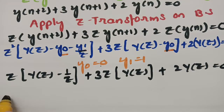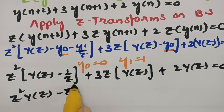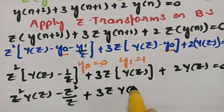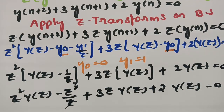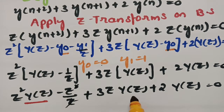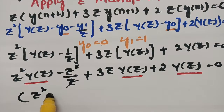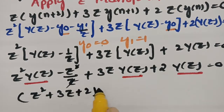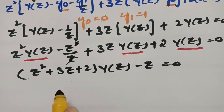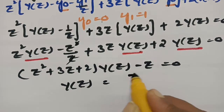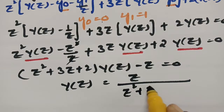Multiplying through, we get Z²·Y(z) minus Z (since Z²/Z simplifies) plus 3Z·Y(z) plus 2·Y(z) equals 0. Taking Y(z) common, we get (Z² + 3Z + 2)·Y(z) equals Z, so Y(z) equals Z divided by (Z² + 3Z + 2).